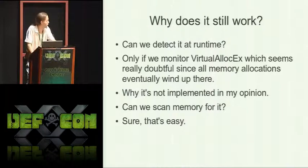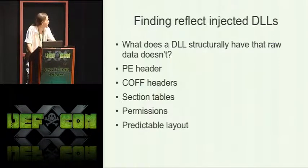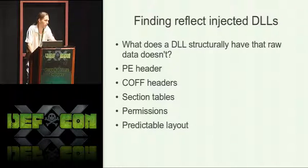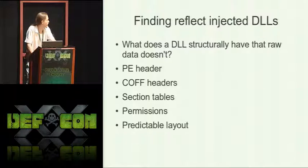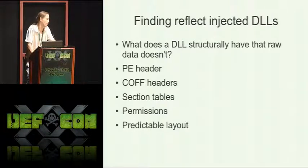We can scan memory for it. From the defensive side, to find reflectively injected DLLs, we could look for executable space, walk backwards, and look for PE headers. If they find ways around that, we could look for something like call signatures — section tables are technically part of the PE header. Then there are permissions — you're looking for anything executable that's not already inside a DLL, which shouldn't happen, but some things use it. Java uses it, Flash uses it, but they're just bad ideas to begin with.